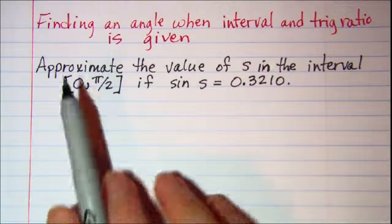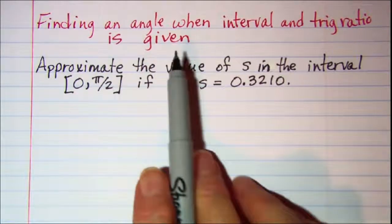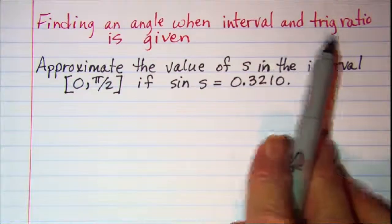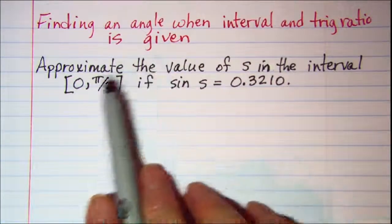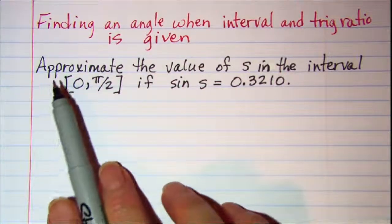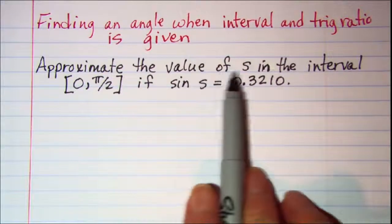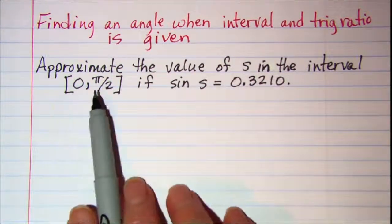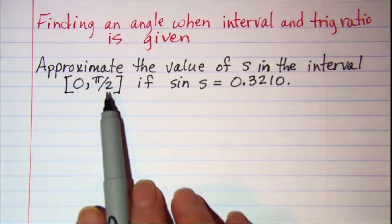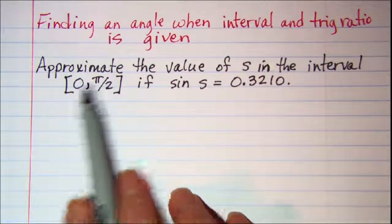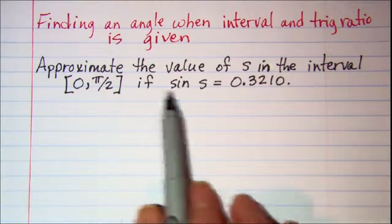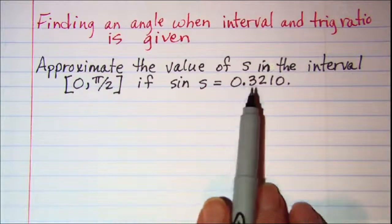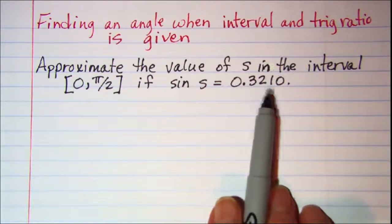In this video we'll be finding an angle when the interval and the trig ratio is given. Our first example is to approximate the value of s in the interval from 0 to pi over 2 inclusive, so quadrant 1, if the sine of s is 0.3210.